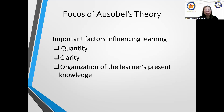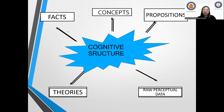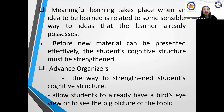When we talk about cognitive structure, it's like Piaget's schema. It includes facts, concepts, propositions, raw perceptual data, and feelings. Meaningful learning takes place when an idea to be learned is related in some sensible way to ideas the learner already has. We learn when a concept or idea seems relevant to us — if you can't relate to it or don't need it, you don't pay much attention to it.